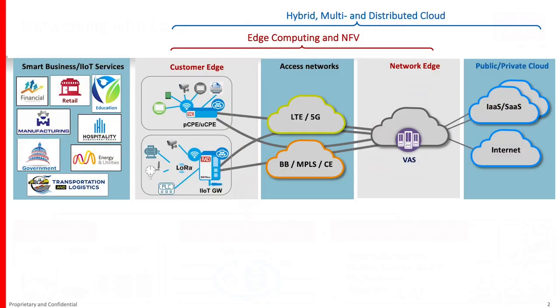In this graphic, I'm showing edge computing and NFV capabilities handled at the customer prem, but it's important to note that these could also be handled at nearby gateways or data centers in the access part of the network or at the network edge. When we talk about hybrid, multi, and distributed cloud, we're basically saying that computation and storage can be provided on-premise, but could also be at the service provider data center, or in public or private clouds, or any combination — as is actually the case with our hybrid cloud environment.